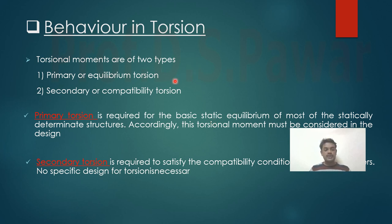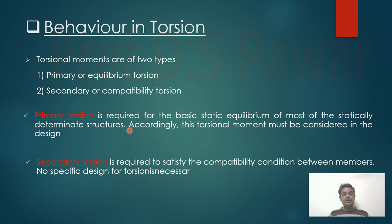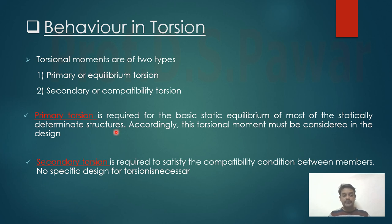Behavior of torsion: torsion moments are of two types. First is primary or equilibrium torsion, and second is secondary or compatibility torsion. Primary torsion is required for the basic static equilibrium of statically determinate structures. When we consider a statically determinate structure, we consider primary torsion, and this torsion moment must be considered in the design. Secondary or compatibility torsion is required to satisfy the compatibility condition between the members, so no specific design for torsion is required in this case.